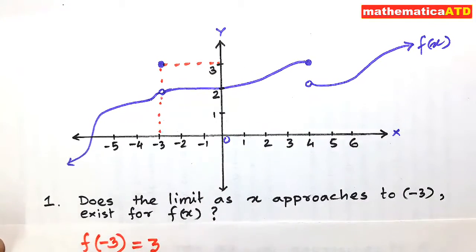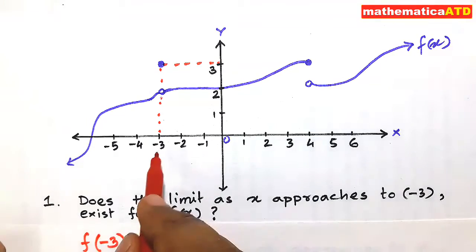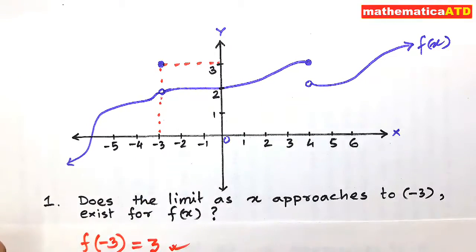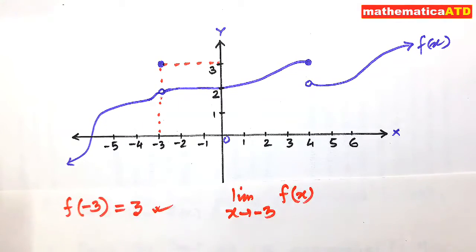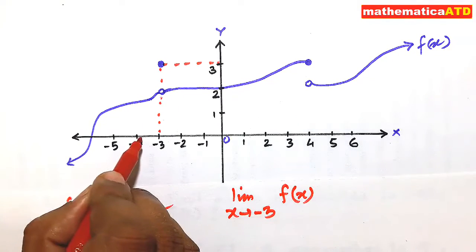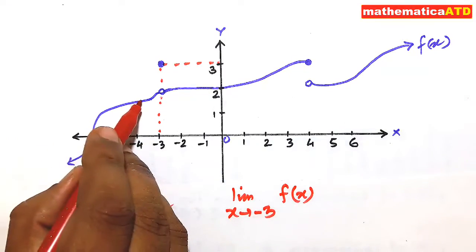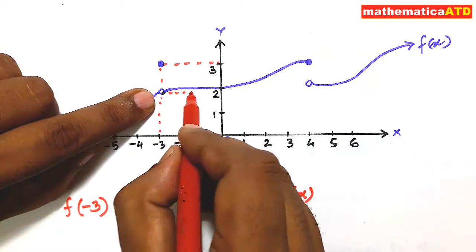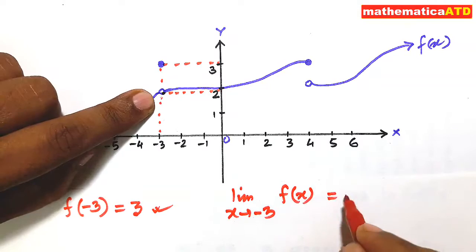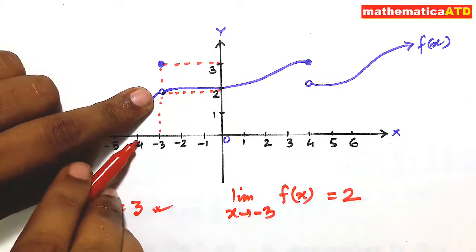So f(-3) = 3 units. But when you are asked to find out whether the limit exists at x = -3, we have to study the graph. When we proceed from the left side of -3, on this graph we are proceeding to the ordinate value 2 units.